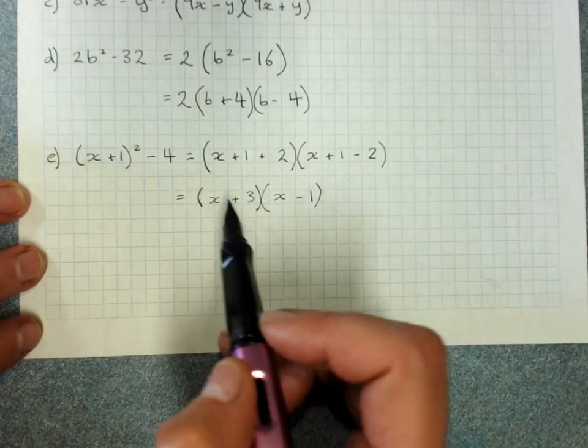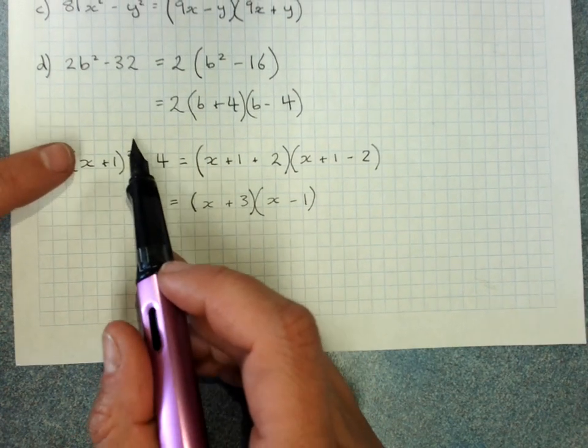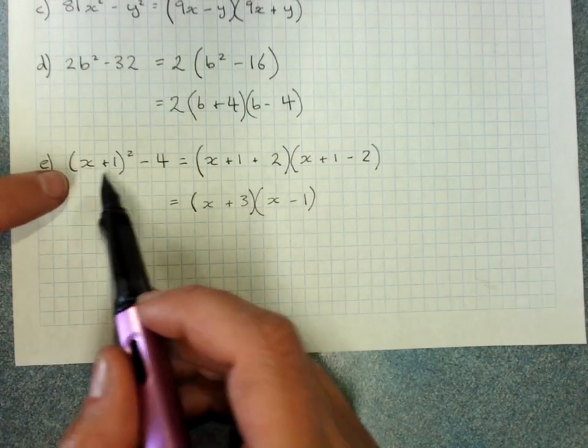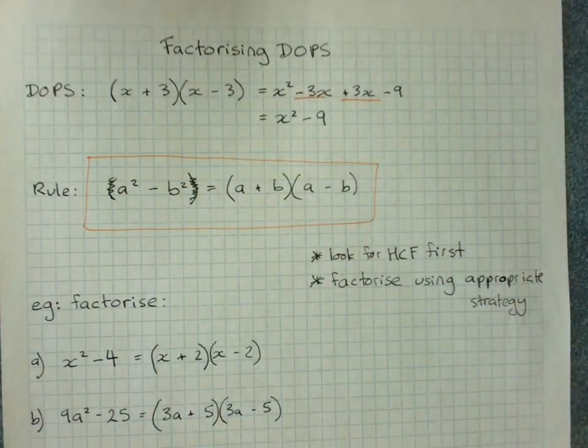So we'll get some interesting types of questions here where our difference of perfect squares involves a perfect square binomial expansion. So that is factorizing difference of perfect squares.